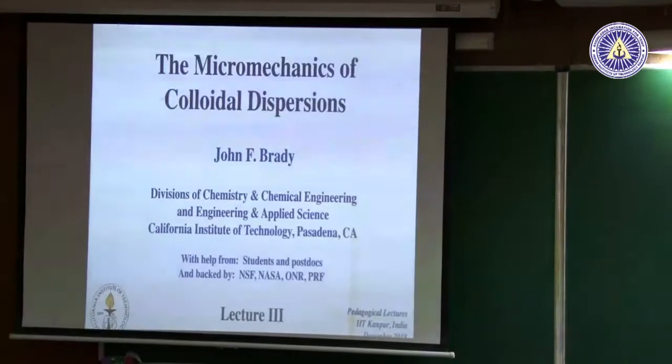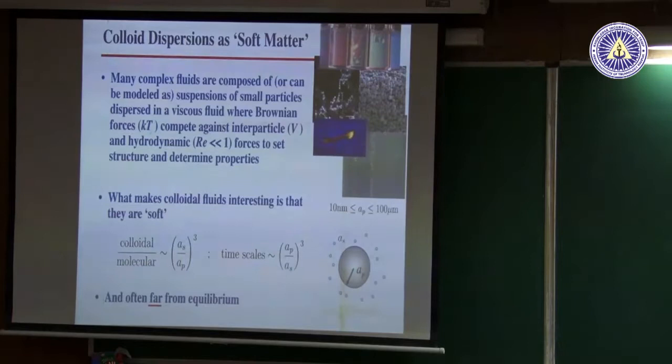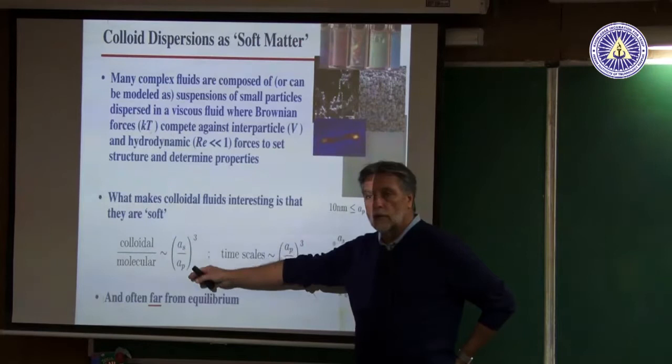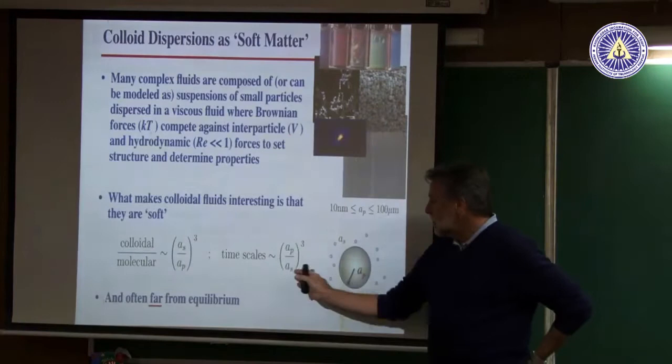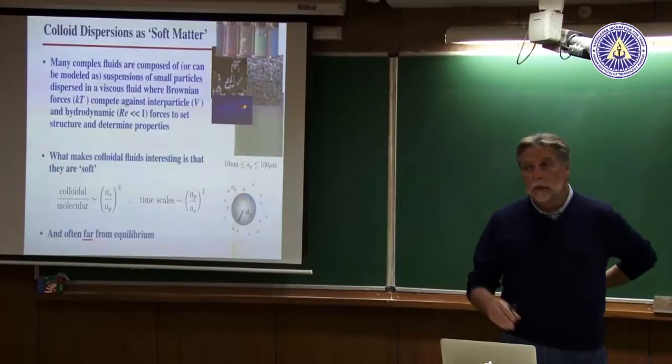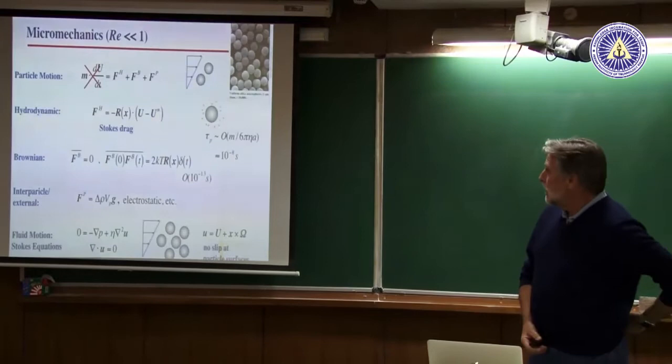Let me start by reminding you of a few things. The most important thing to remember is why these systems are interesting and why they're soft — because the size of the colloidal particle is much larger than a solvent molecule, so they're weaker by the factor of the size ratio cubed. That's because the number density is less, and the timescales are slowed down by the same size ratio. This gives a separation of length and timescales, allowing us to treat the fluid as a continuum and only worry about the motion of the colloidal particles.